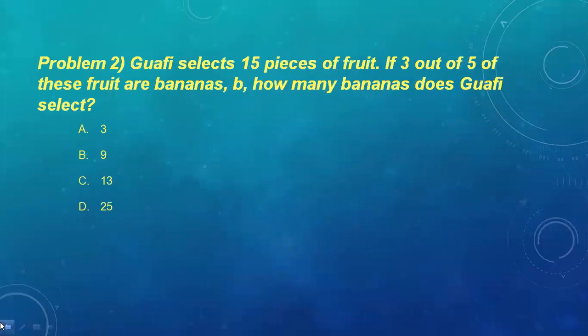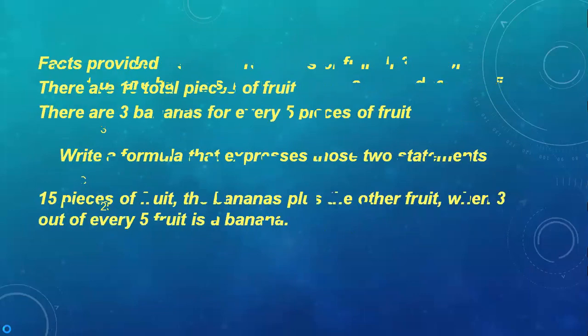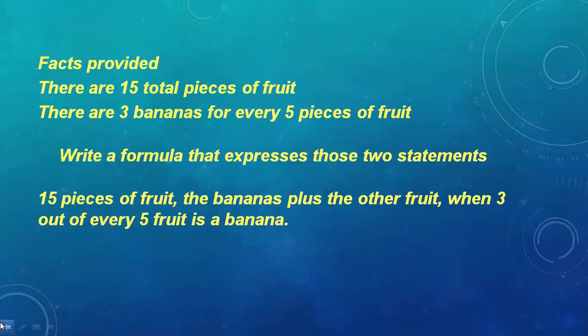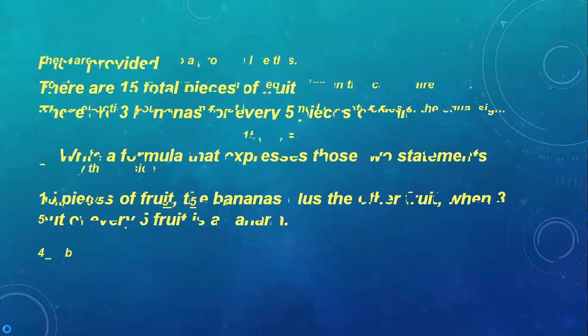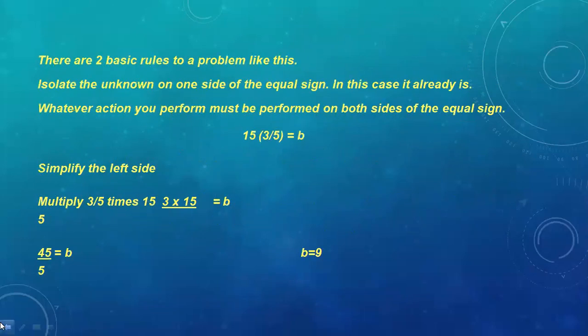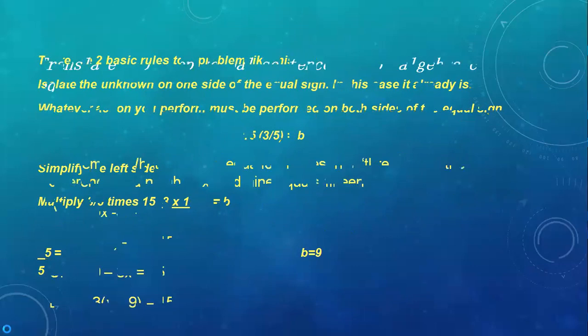Next: if we select 15 pieces of food, and 3 out of 5 are bananas, how many bananas does the group have? Here we apply the commutative property and the formula to express that value. The procedure is to isolate the variable and find the value of B by multiplication. The answer is B equals 9.